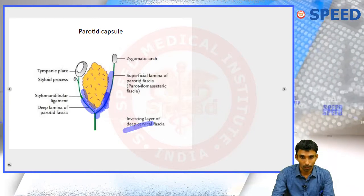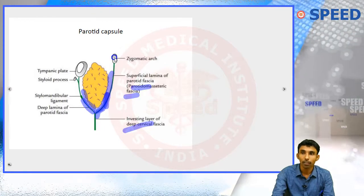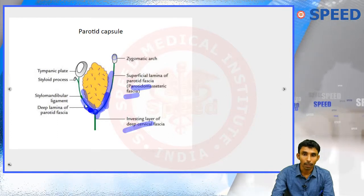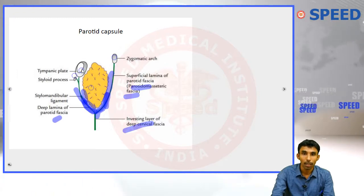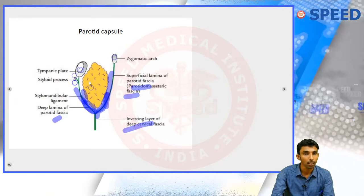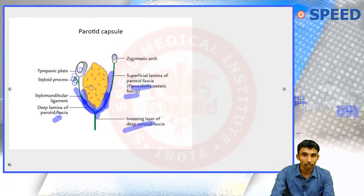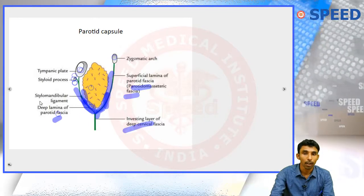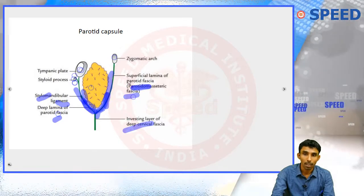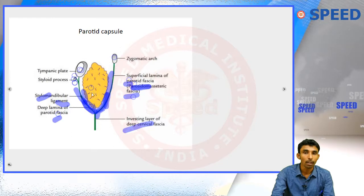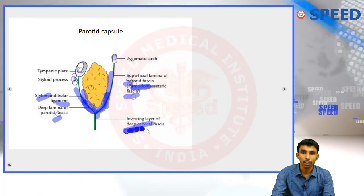The superficial lamina of the parotid fascia is otherwise called the parotidmasseteic fascia, and it attaches above to the zygomatic arch. The deep lamina passes behind and deep to the parotid gland, attaching to the tympanic plate and the styloid process of the temporal bone. This deep lamina is thickened and extends from the styloid process to the angle of the mandible, forming the stylomandibular ligament.